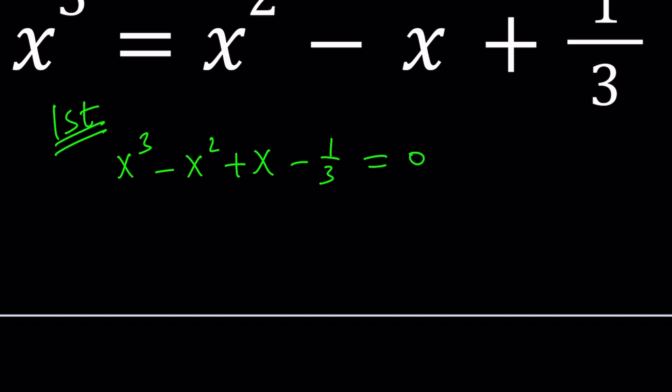So we want something like x cubed plus bx plus c equals zero. And then this equation can be easily solved, which I'm going to show you how to do. So that's the whole idea.